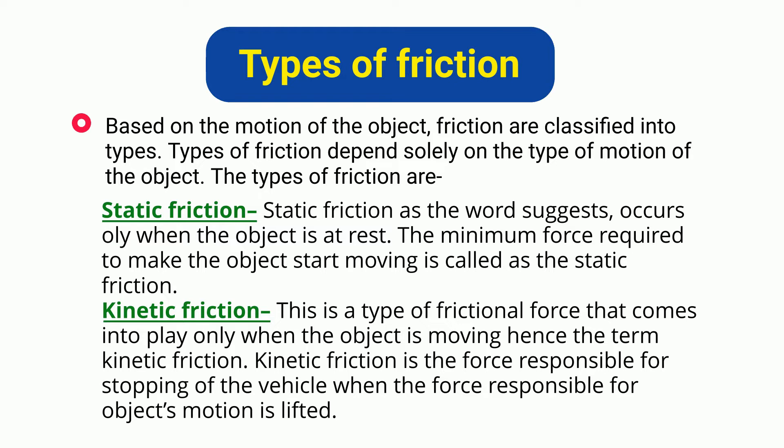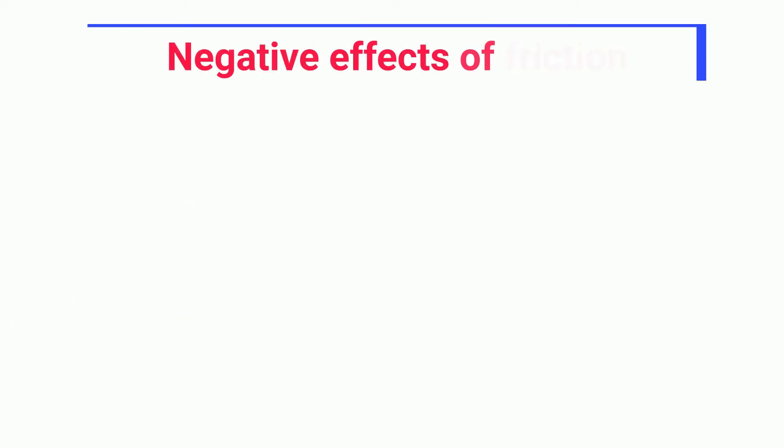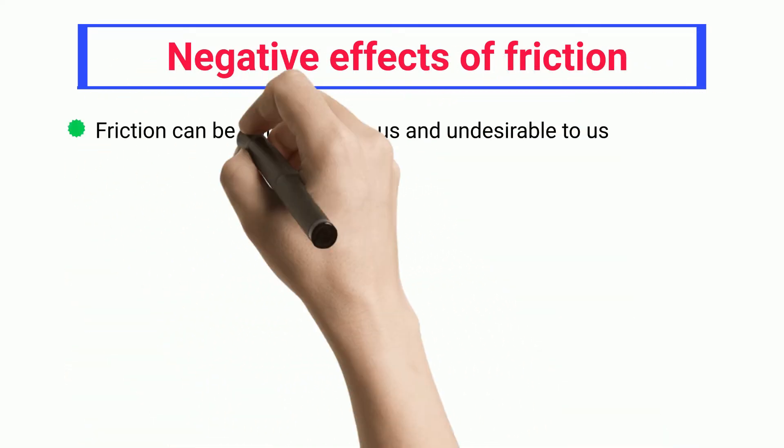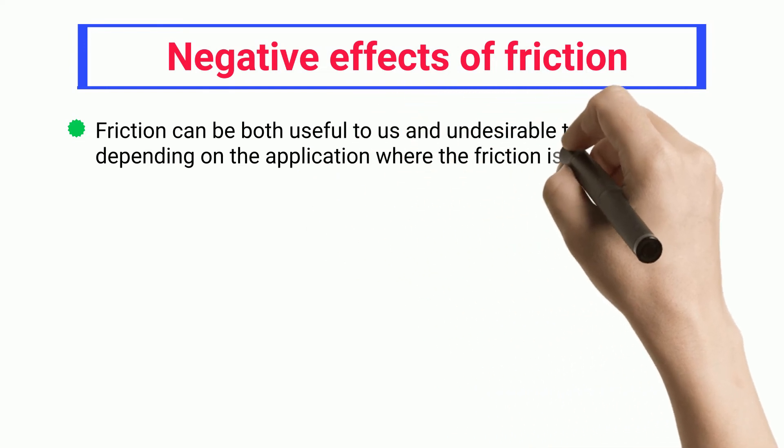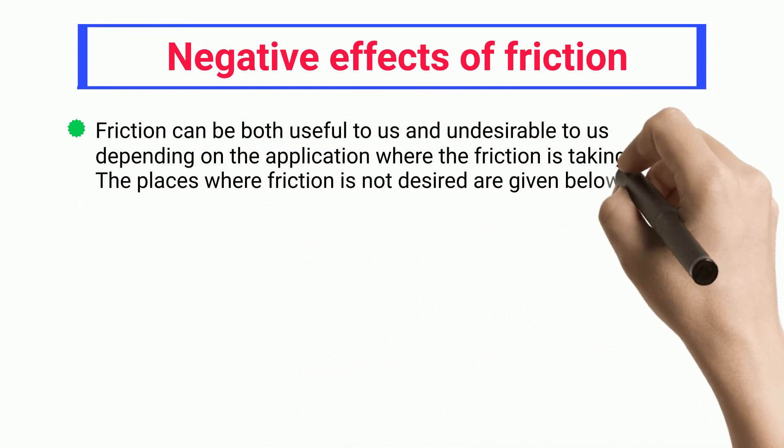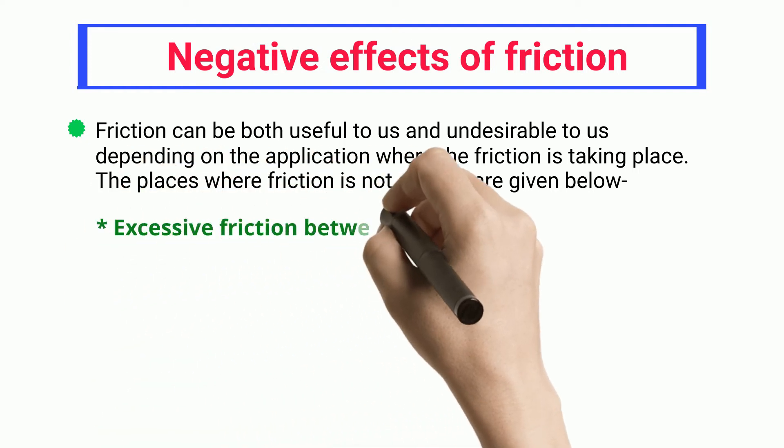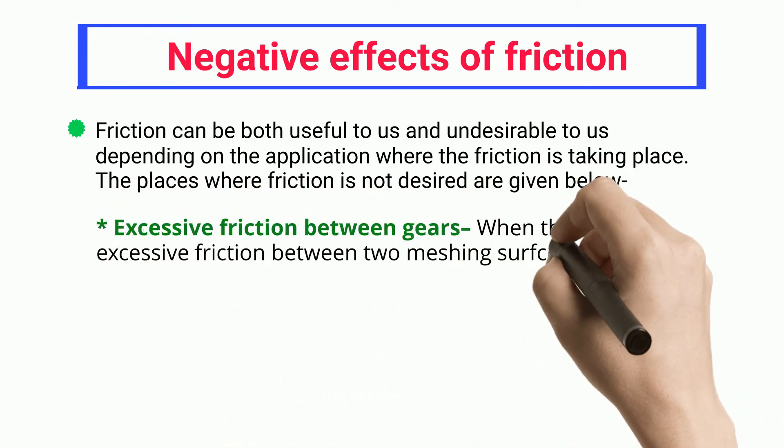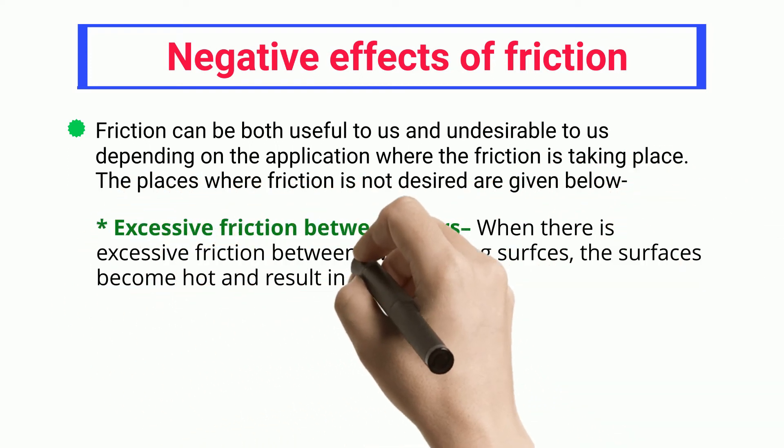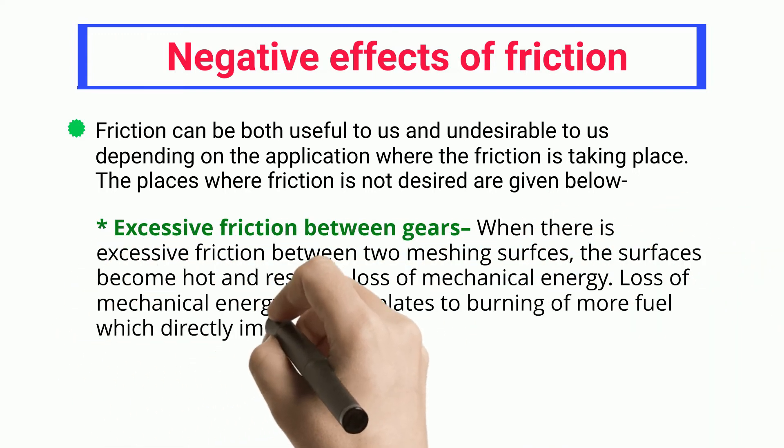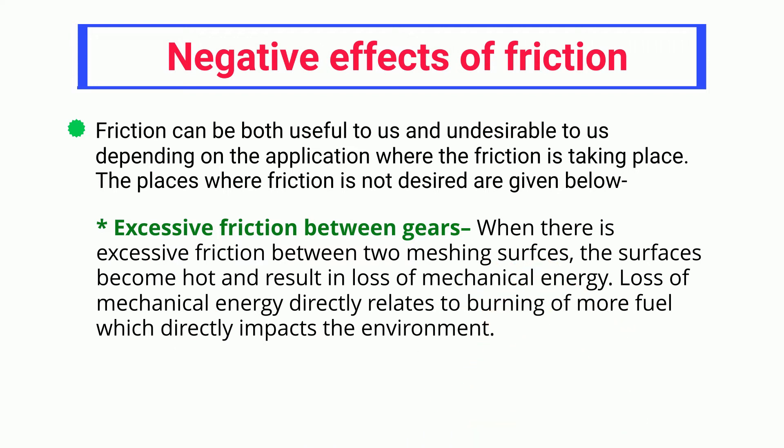Negative effects of friction: Friction can be both useful and undesirable depending on the application where the friction is taking place. The places where friction is not desired are given below. Excessive friction between gears: When there is excessive friction between two meshing surfaces, the surfaces become hot and result in loss of mechanical energy. Loss of mechanical energy directly relates to burning of more fuel, which directly impacts the environment.